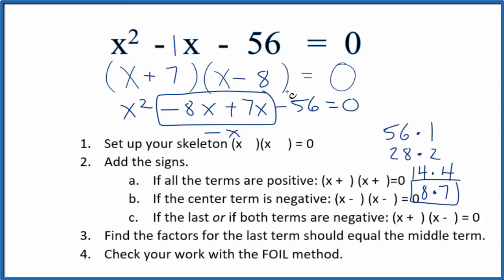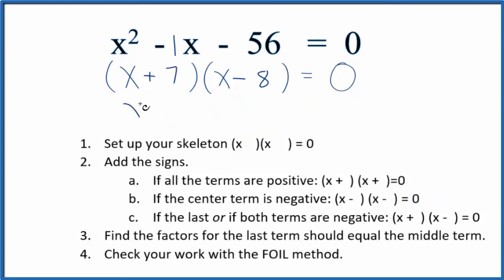Now we need to figure out which values for x will make this equation here 0, and here's how we do it. We say x plus 7 equals 0, so we subtract 7 from both sides, x equals minus 7. Over here x minus 8 equals 0, we add 8 to both sides, x equals 8.